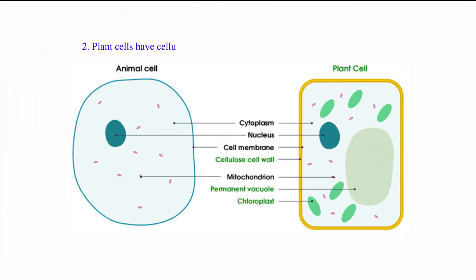Two: plant cells have cellulose cell walls, but animal cells lack cellulose cell walls.